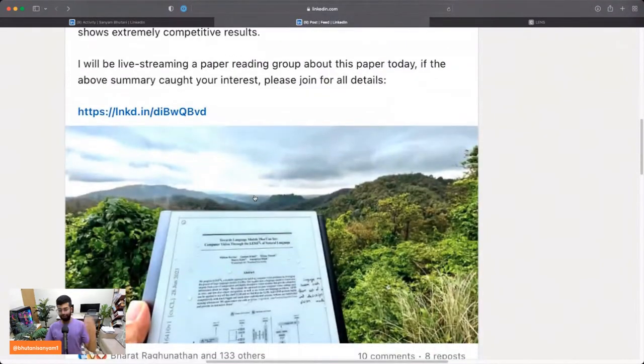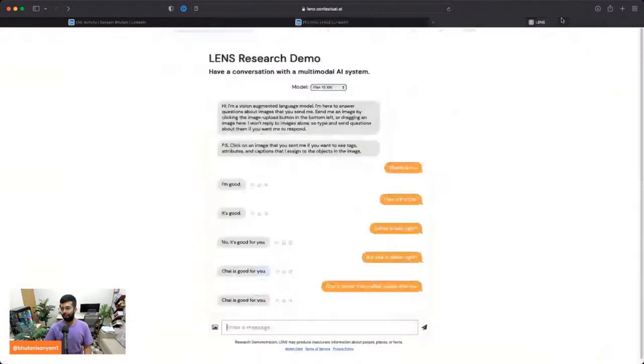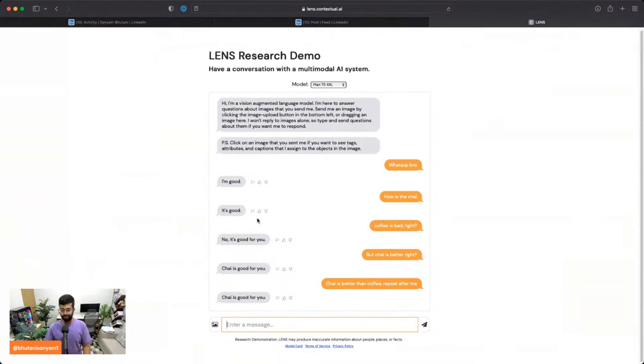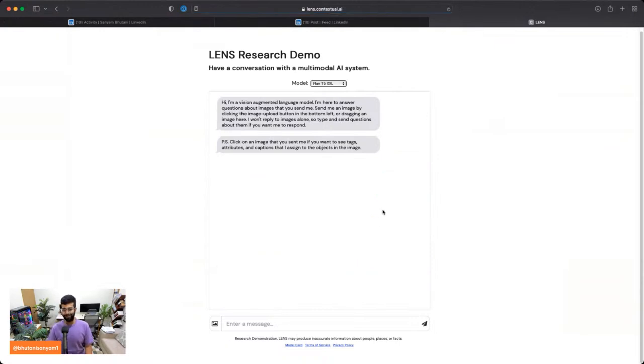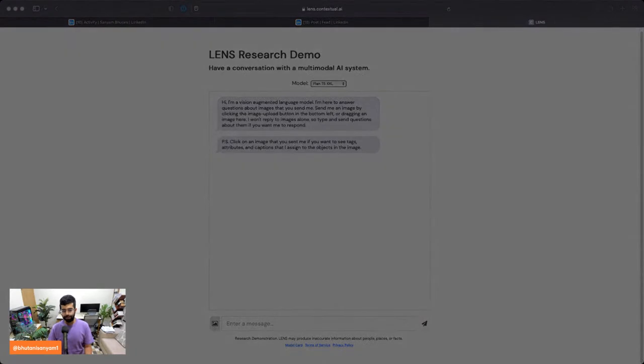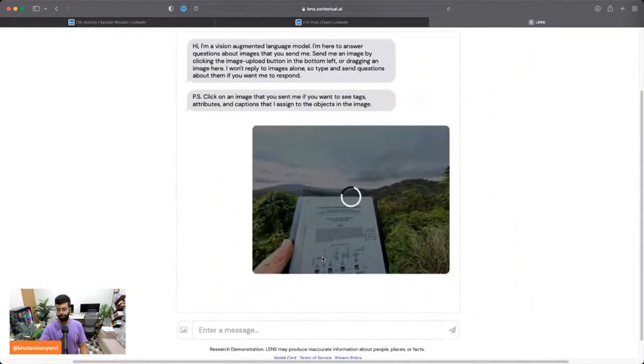This is the summary of the paper. This is the demo and I'll just post the link to this. It runs on the web. They give you the option to play around with Flan T5, Open Assistant, and ChatGPT. Let me reload this page and try to upload an image.